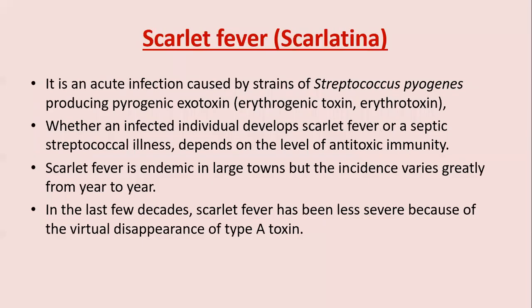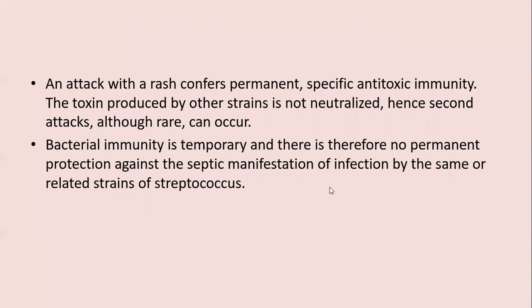Scarlet fever or scarlatina is an acute infection caused by strains of Streptococcus pyogenes producing a pyrogenic exotoxin (erythrogenic toxin or erythrotoxin). Whether an infected individual develops scarlet fever or a septic streptococcal illness depends on the level of anti-toxic immunity. Scarlet fever is endemic in large towns but incidence varies greatly. In recent decades scarlet fever is less severe due to virtual disappearance of type A toxin. The attack with rash confers permanent specific anti-toxic immunity; second attacks, though rare, can occur as bacterial immunity is temporary.